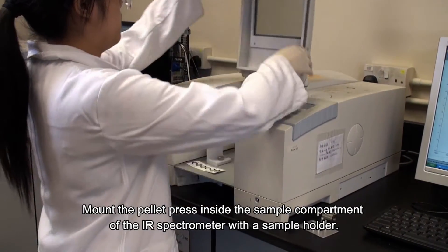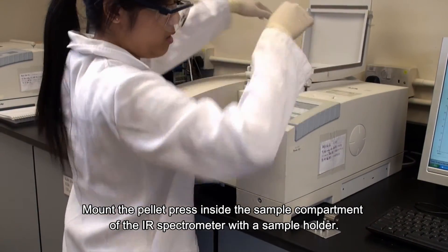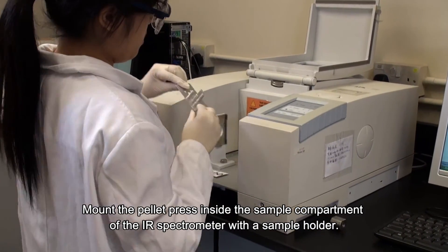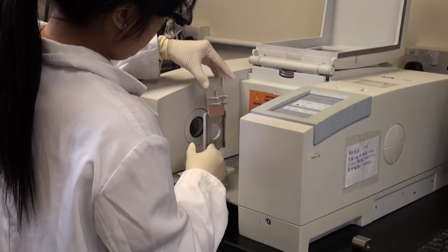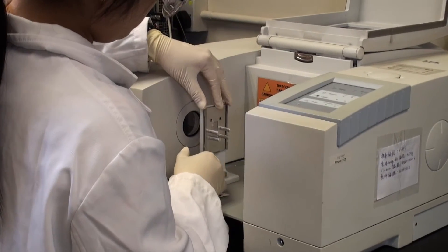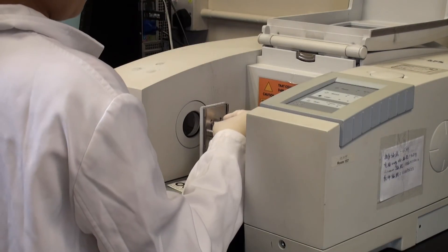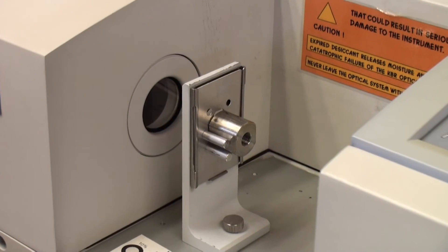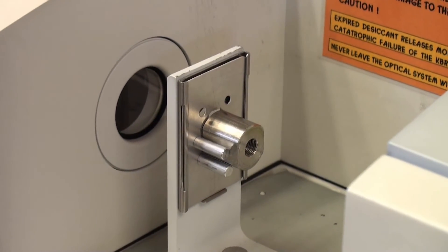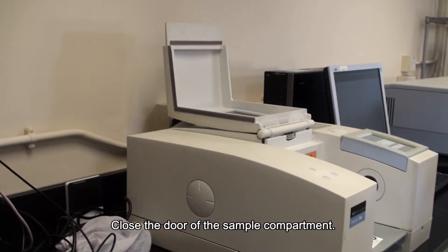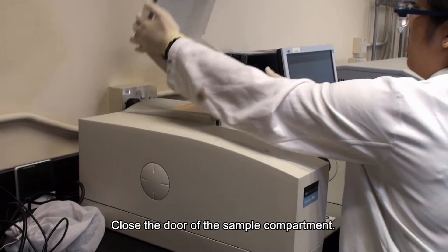Mount the pellet press inside the sample compartment of the IR spectrometer with a sample holder. Close the door of the sample compartment.